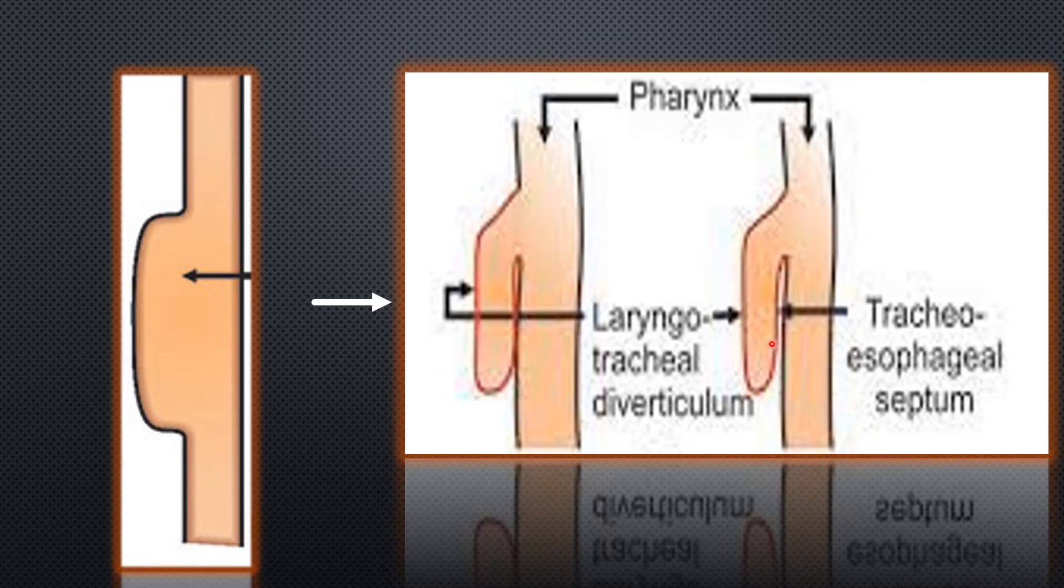This groove is producing a septum, and this septum is called a tracheoesophageal septum. In front of the septum, the tube is formed now, that is laryngotracheal tube.